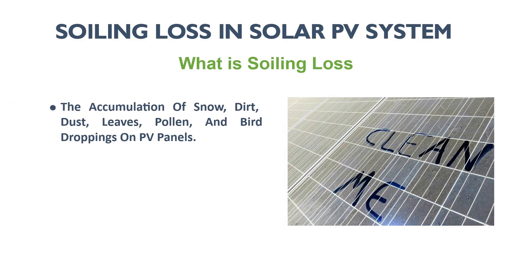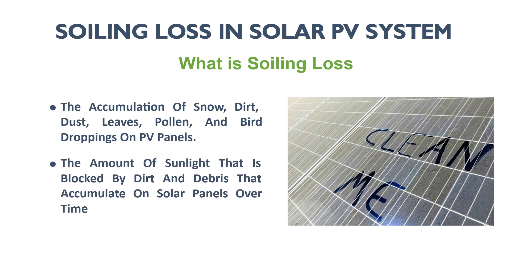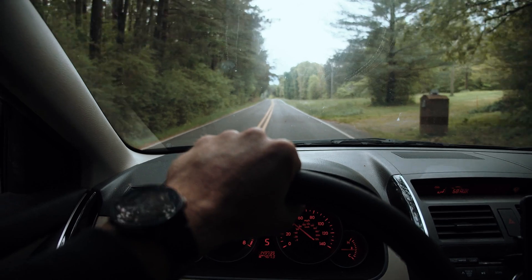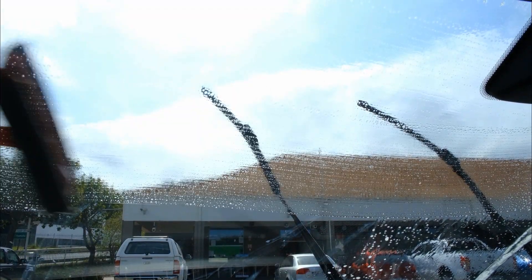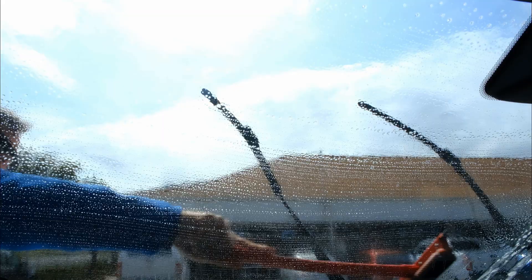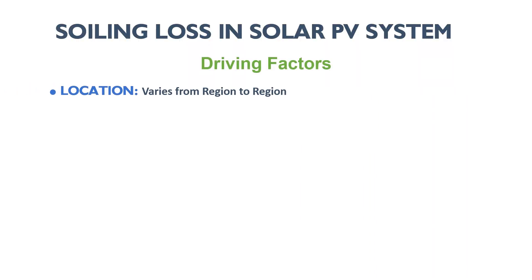The term soiling is used to describe the accumulation of snow, dirt, dust, leaves, pollen, and bird droppings on PV panels. This accumulation can lead to a significant decrease in energy produced by the PV module. The amount of sunlight blocked by dirt and debris that accumulates on solar panels over time is known as soiling loss — just like a car's windshield, where small amounts of dust and dirt can accumulate and scatter light.